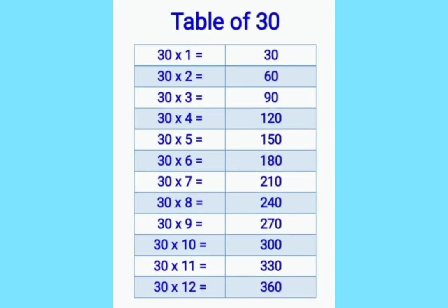30 ones are 30. 30 twos are 60. 30 threes are 90. 30 fours are 120. 30 fives are 150. 30 sixes are 180. 30 sevens are 210. 30 eights are 240. 30 nines are 270. 30 tens are 300. 30 elevens are 330. 30 twelves are 360.